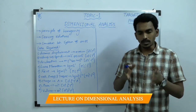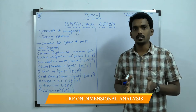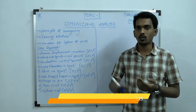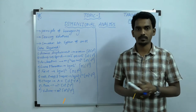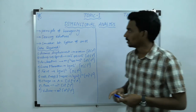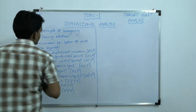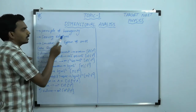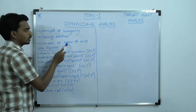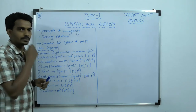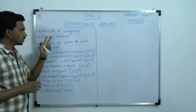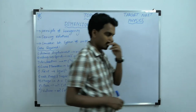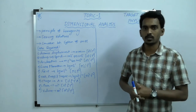First of all, let us understand what kind of questions may come. There are three things: one is principle of homogeneity, deriving relations, and conversion between different system of units. These are the three types of questions most of the times they are asked from an entrance point of view.